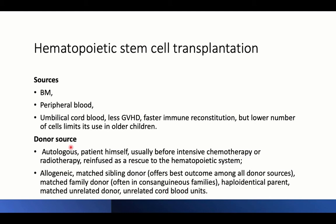Donor sources can be autologous — from the patient himself, for example harvesting stem cells before intensive chemotherapy in a leukemia patient — or allogeneic. Allogeneic sources, in order of preference, are: matched sibling donor (best outcome), matched family donor, haploidentical parent, matched unrelated donor, or unrelated cord blood units.